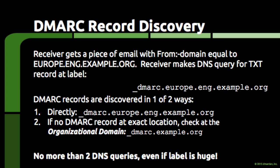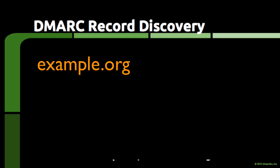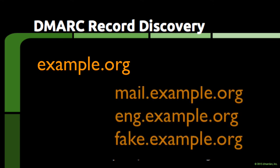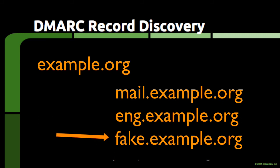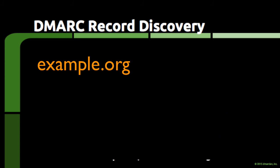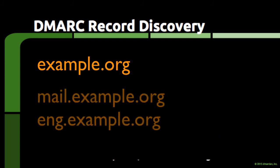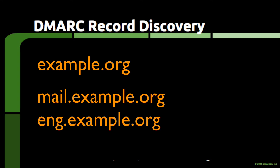There are also some useful ramifications of this discovery process. You can publish a single DMARC record at the organizational domain level and have it cover all subdomains. It doesn't matter if a spammer makes up their own subdomains — you can still publish a DMARC record that covers them without having to publish explicit records for all imaginable subdomains. Additionally, you can publish DMARC records for your real subdomains, and those records will override what is published at the organizational domain level.